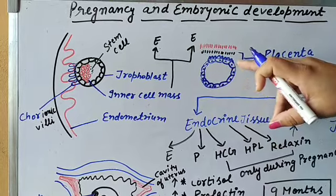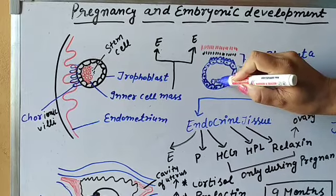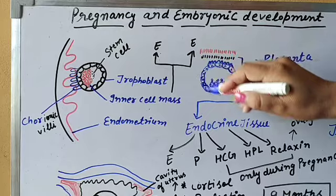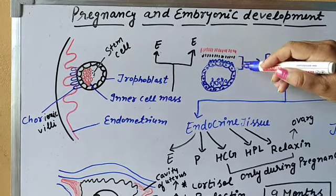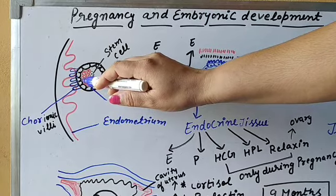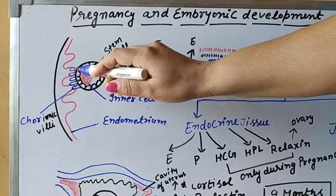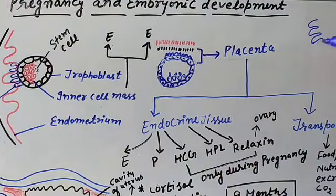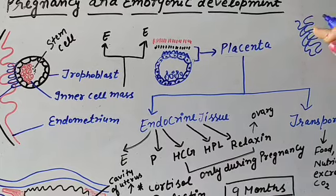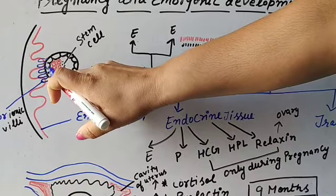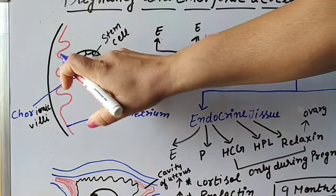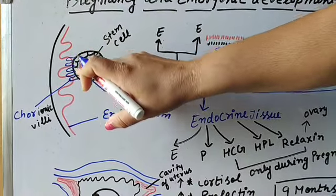Here is the diagram of the blastocyst, which also has the inner cell mass inside it. After some time, the trophoblast of this blastocyst gives rise to finger-like projections known as chorionic villi. These chorionic villi show interdigitation with the endometrium lining, and along with the maternal blood, they make a disc-like structure known as the placenta.